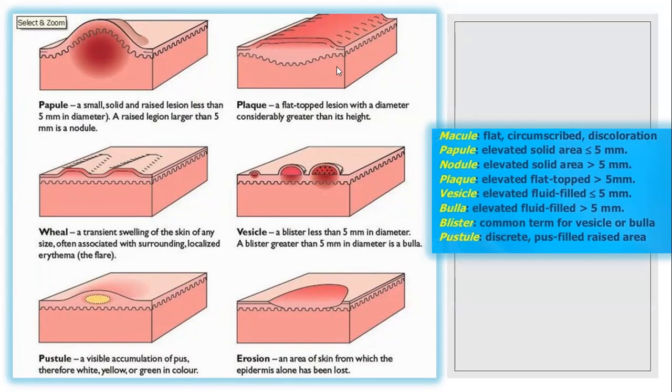Where is the plaque? Flat, you see in the picture, flat, but it is elevated or raised. Flat-topped lesion with a diameter greater than 5mm, this is called plaque, more than 5mm. Where is the vesicle? This is elevated, fluid content. It contains the fluid. If less than 5mm - vesicle. But if it is more than 5mm, we call it bulla or blister. A greater than 5mm diameter, we call it bulla or blister, common term of vesicle or bulla.